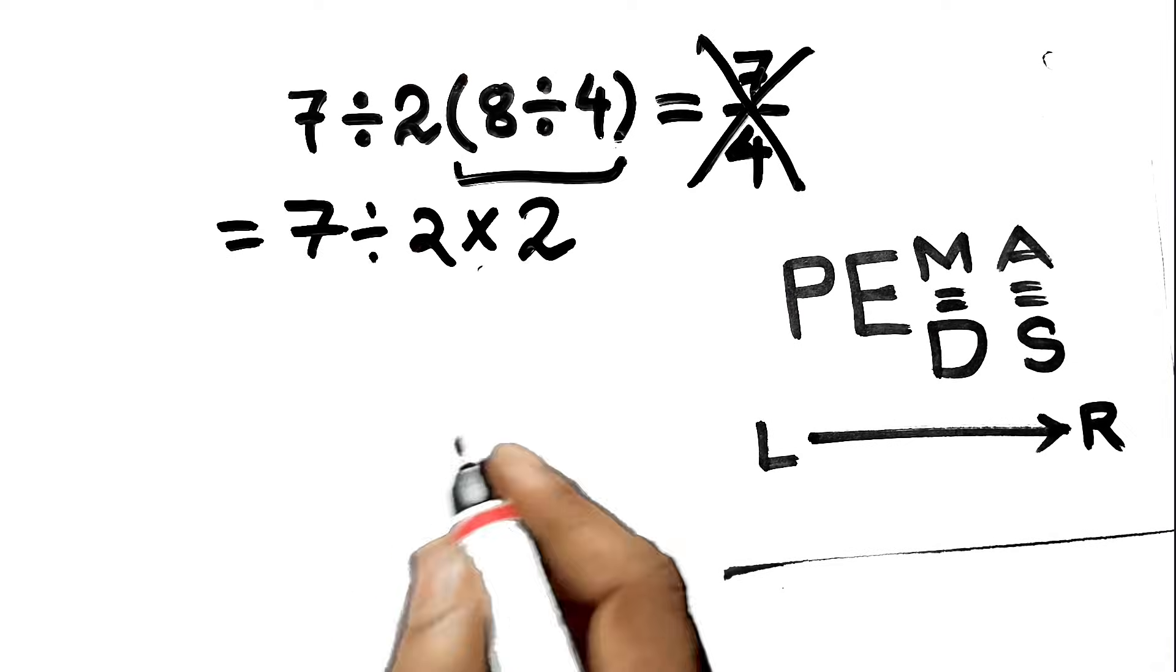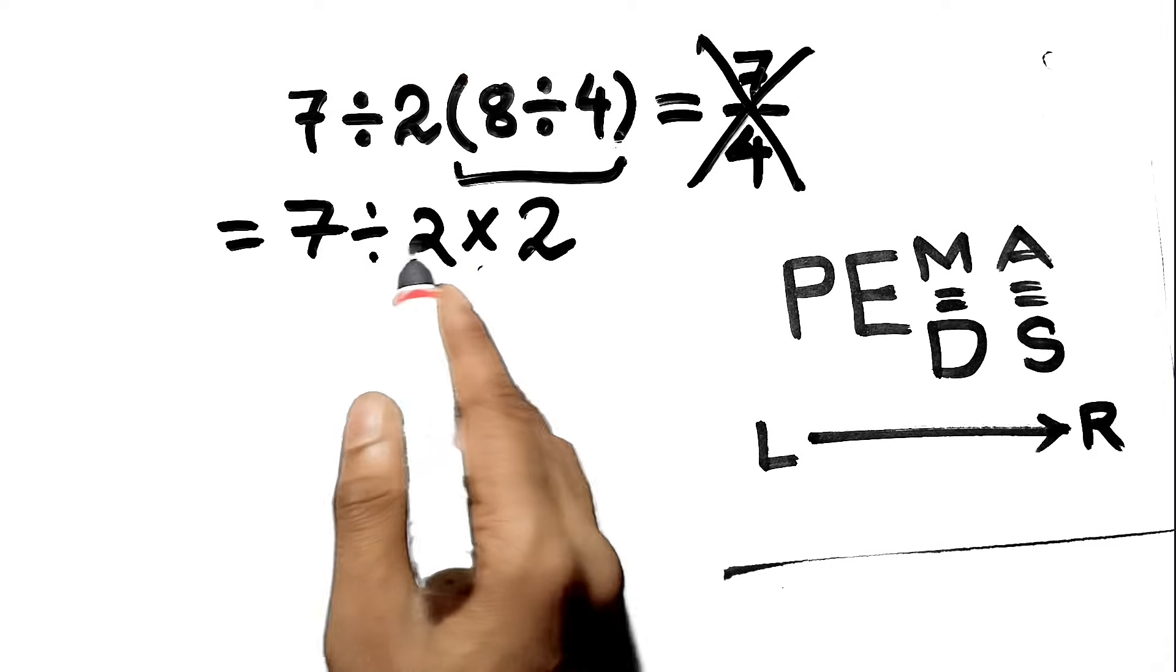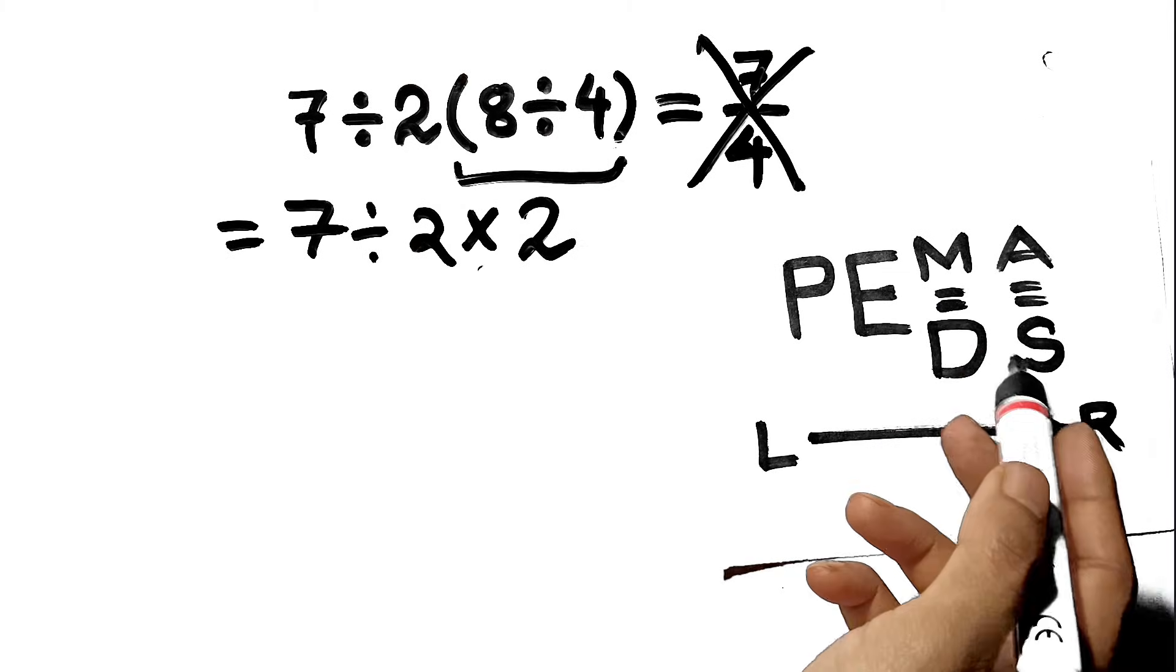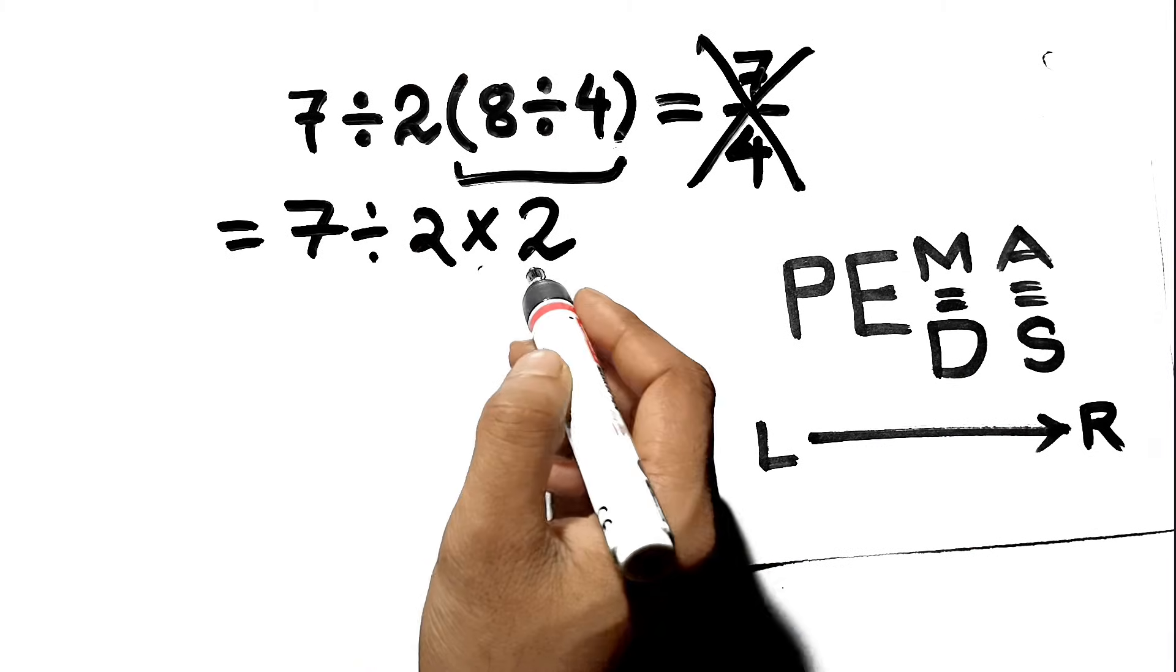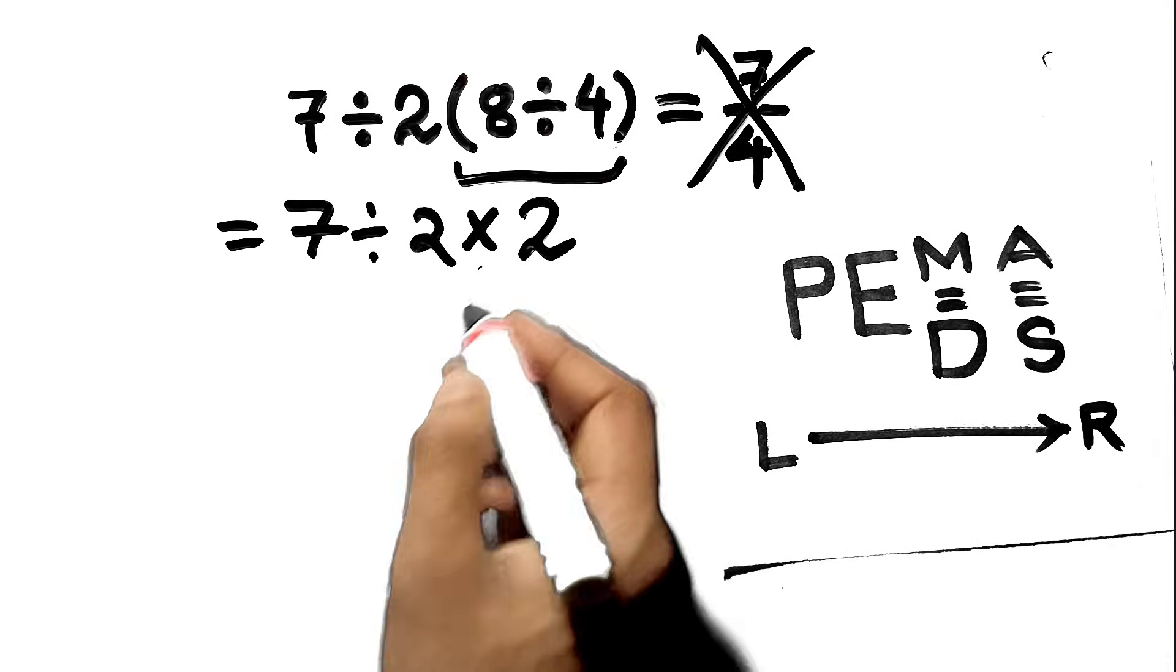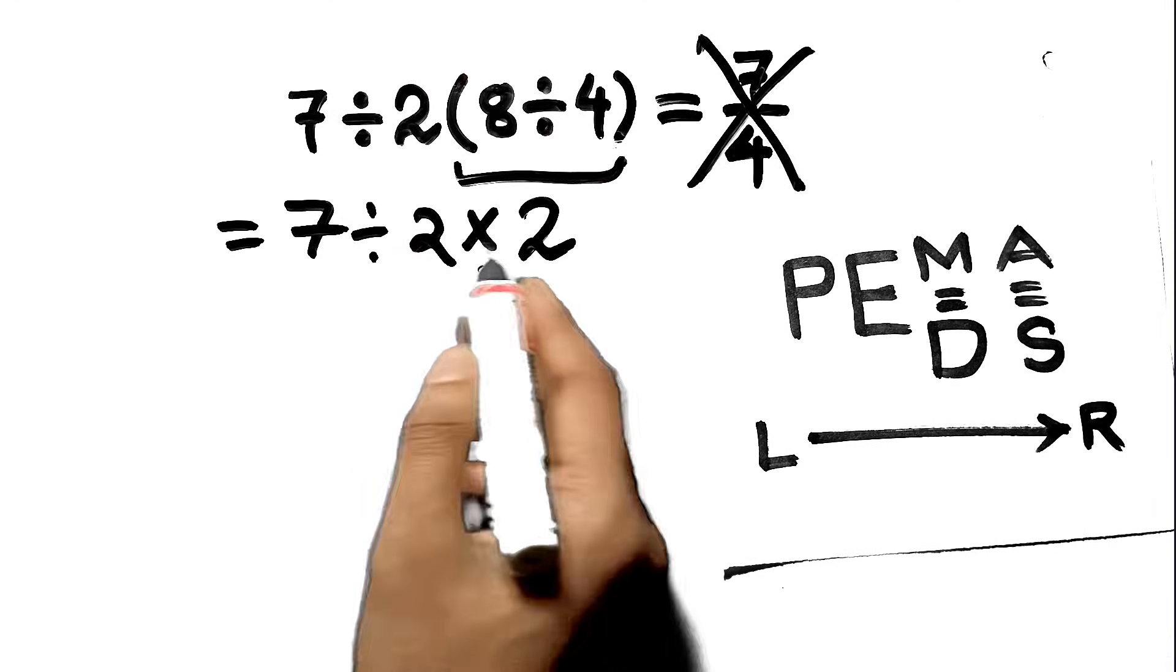Here's the critical part that's often overlooked. Division and multiplication have equal priority. That means you don't just do the multiplication first because it looks next. Instead, we move left to right.